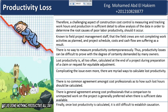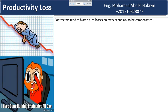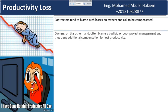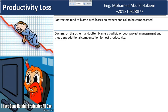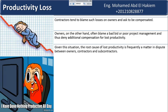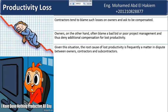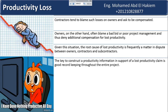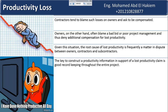Once lost productivity is calculated, it is still difficult to establish causation. Contractors tend to blame such losses on owners and ask to be compensated. Owners, on the other hand, often blame a bad bid or poor project management and thus deny additional compensation. Given this situation, the root cause of lost productivity is frequently a matter in dispute between owners, contractors, and subcontractors. The key to supporting a lost productivity claim is good record keeping throughout the entire project.